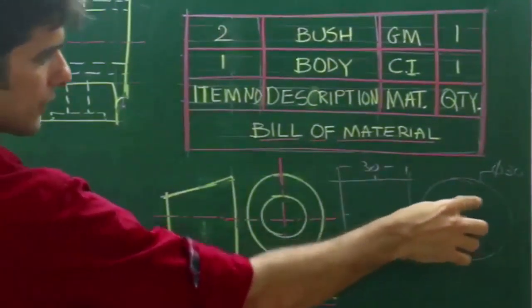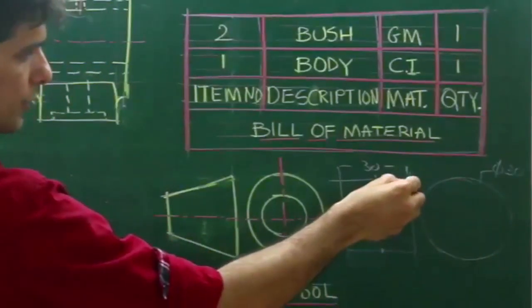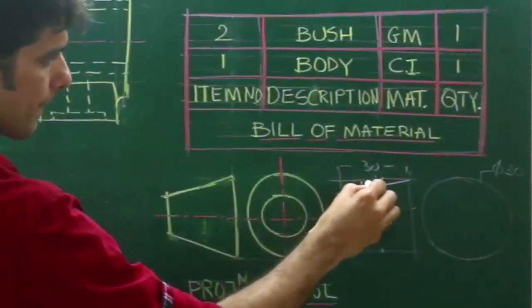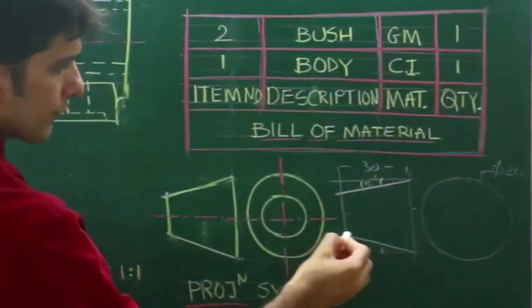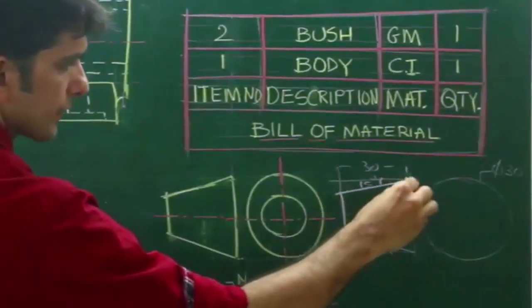You draw square of 30 and draw a circle, then from here you draw 15 degrees, from here you draw 15 degrees, you will get this.